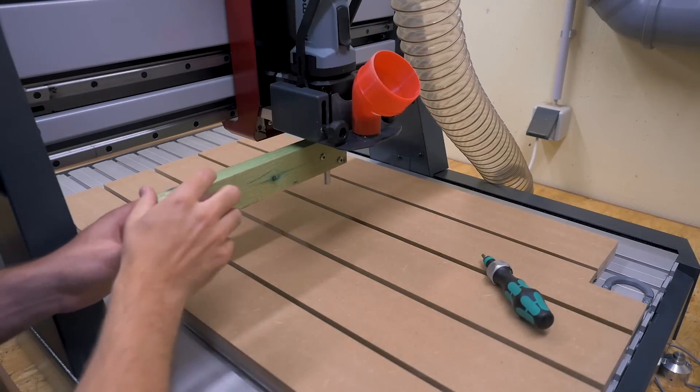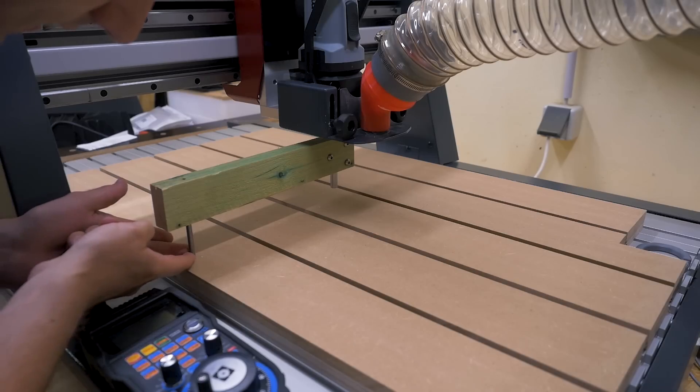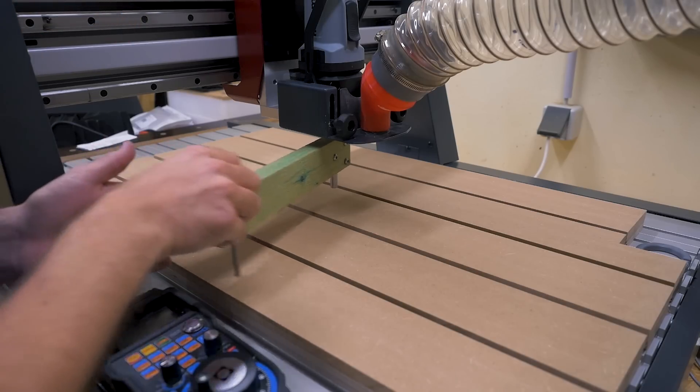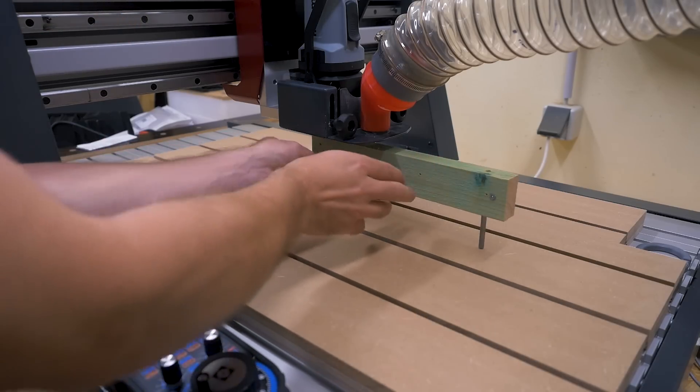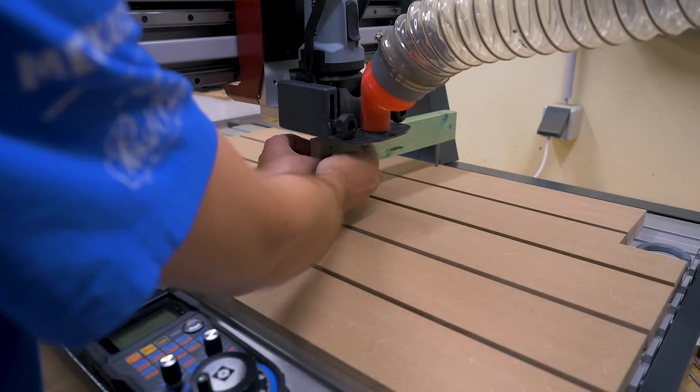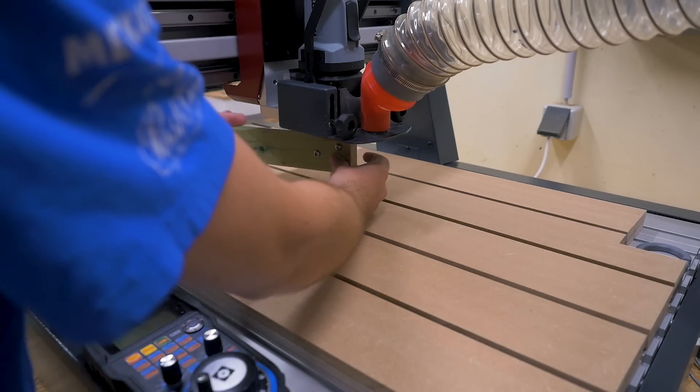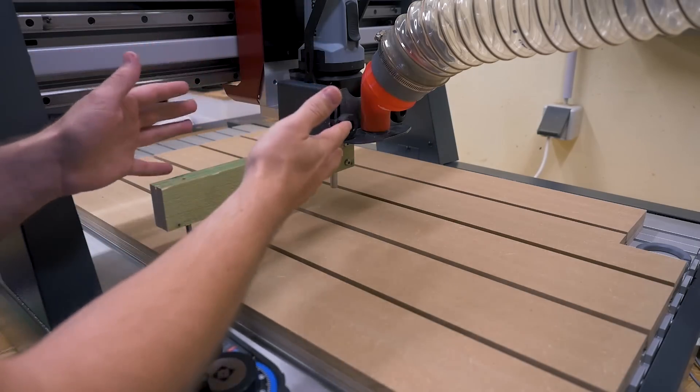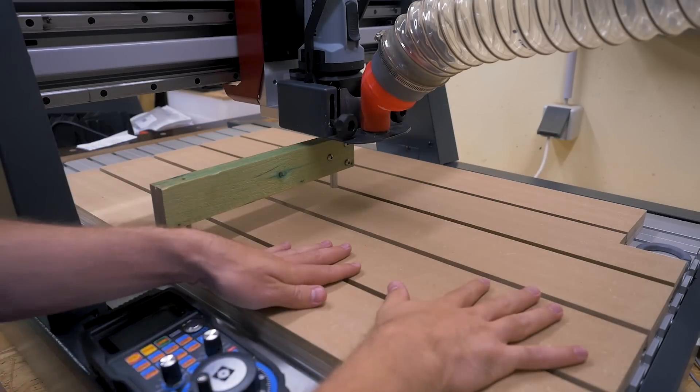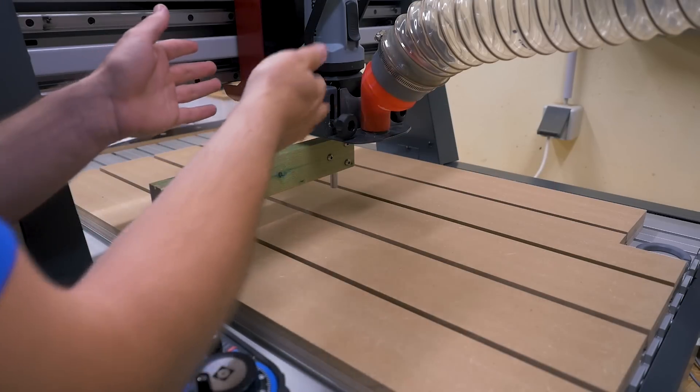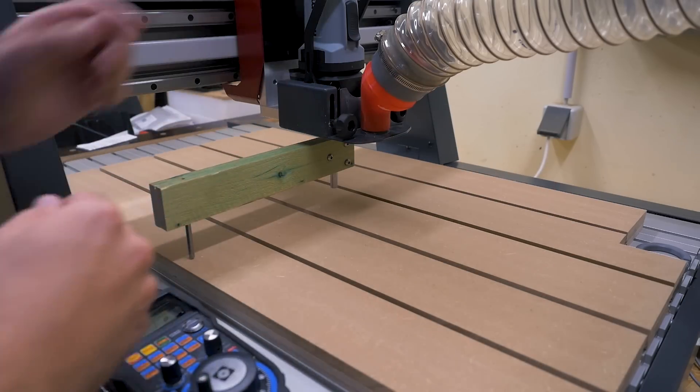Maybe also turn it off. Now I can measure the distance between this pin and surface, and that has to be exactly the same on four positions. If that's the case, then the spindle is perpendicular to the machine bed. If not, I need to adjust the spindle mount.